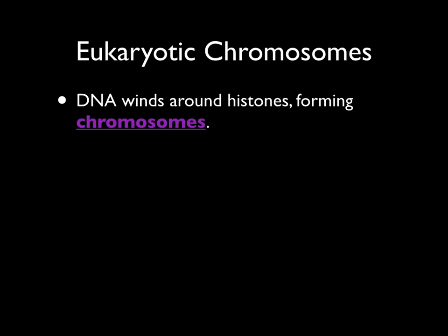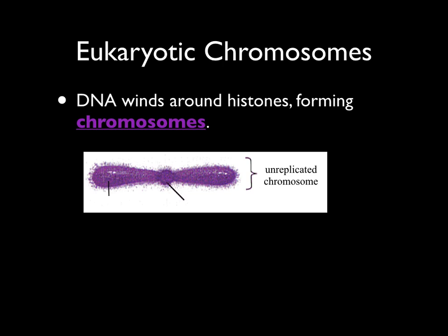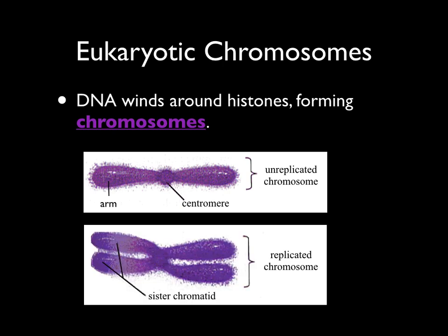When you think of a chromosome, this is the typical image that comes to mind. Each chromosome consists of one double helix that's been condensed down. All chromosomes have the same basic structure — notice there's a central region called the centromere, and extending from the centromere on either side are two branches called the arms of the chromosome. When the DNA is replicated, we end up with a replicated chromosome that looks like two individual chromosomes attached together at the centromere. Replicated chromosomes attached in this way are referred to as sister chromatids.